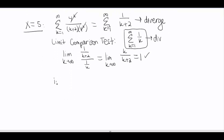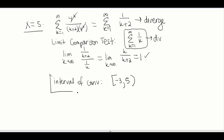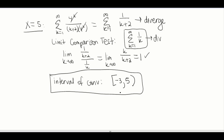So our interval of convergence is going to be negative 3 — and I want to include that because that one did converge — to 5, but I'm not going to include that because that one diverged, so I'll put a parenthesis there. There are lots of pieces with these problems, and you've got to put all those pieces together from stuff we've done before. Thank you for watching.